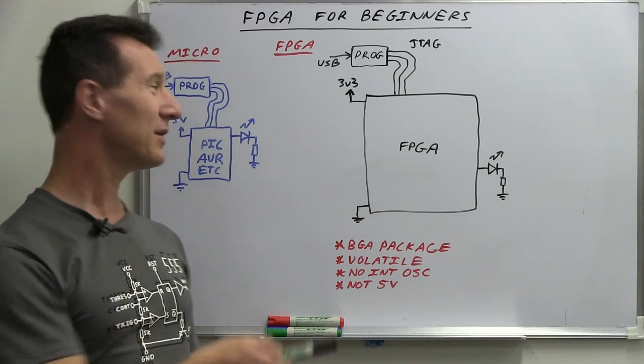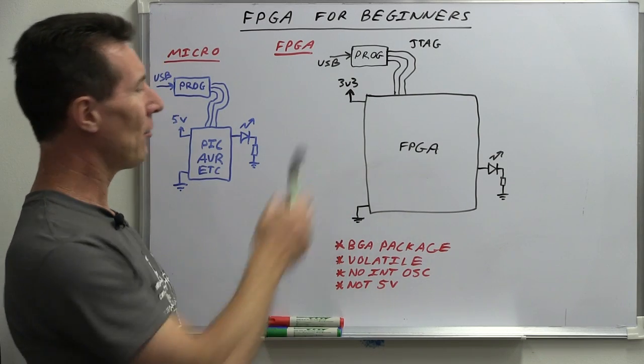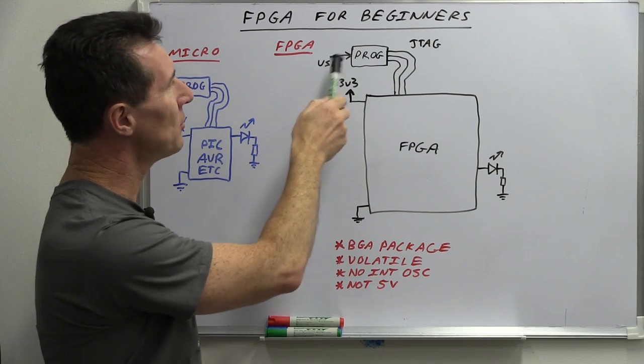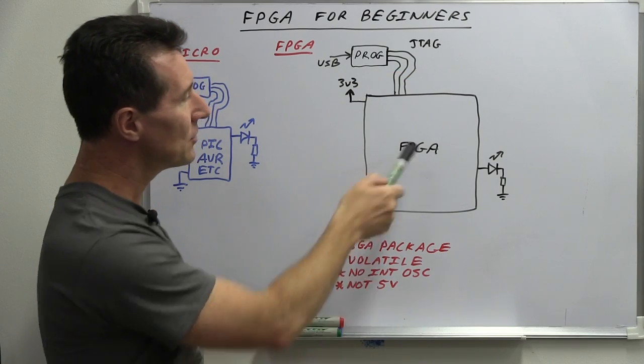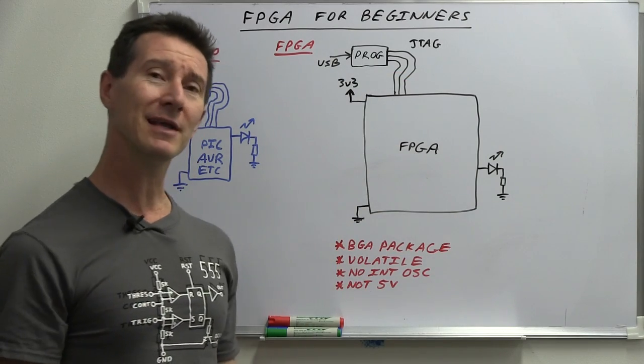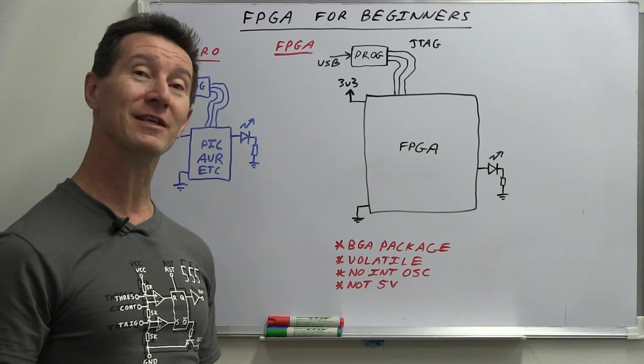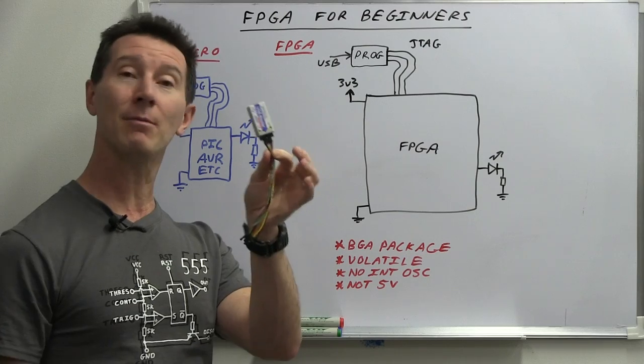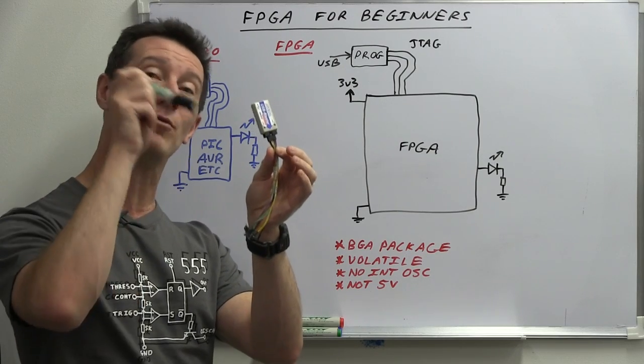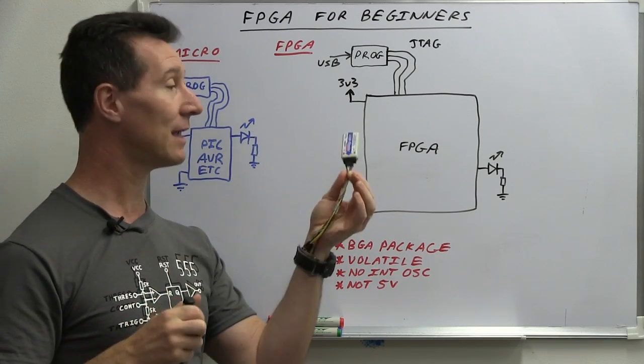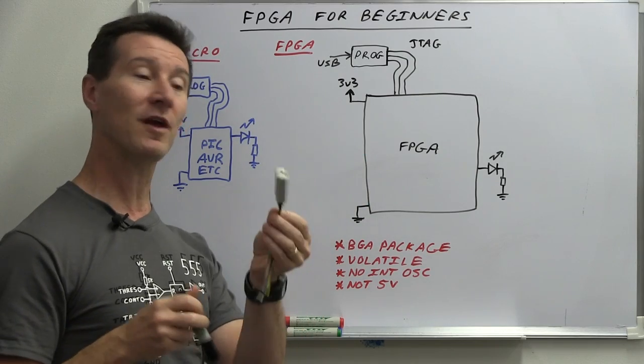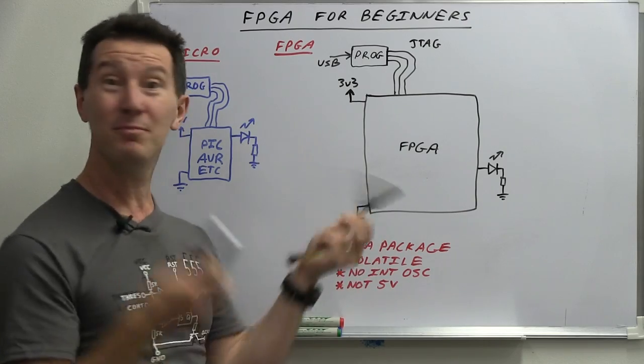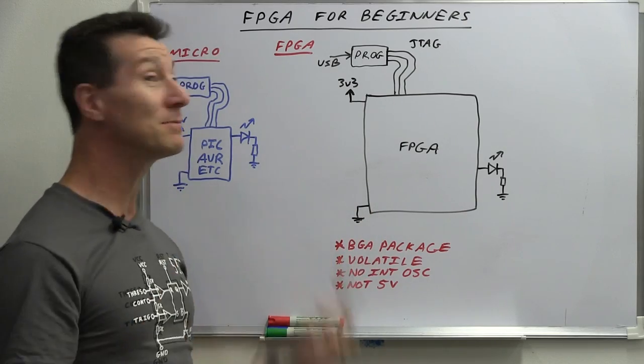So you can't just do the same thing you can with the micro here. Throw it on your breadboard, hook up your 5 volt supply, hook up your USB programmer, JTAG programmer, to the thing and get it to blink your LED. It's not that easy like it is with a microcontroller. Yes, you can get simple, cheap, little JTAG programmers which I've done a separate video on, that will be linked down below, how the JTAG programming system works for FPGAs. But you can get these cheap programmers, but it doesn't work the same as micros.